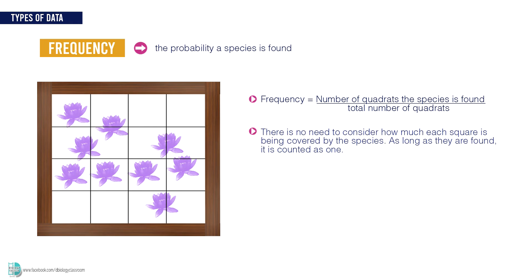In this data sampling, you don't have to consider how much of the small square is being covered by the species. As long as they are found, it is counted as 1. In my example, the plant can be found in 12 out of 16 squares, so the frequency is 0.75.